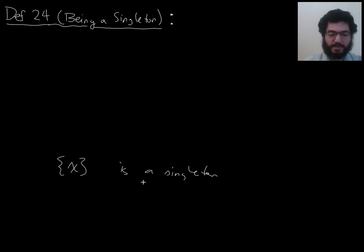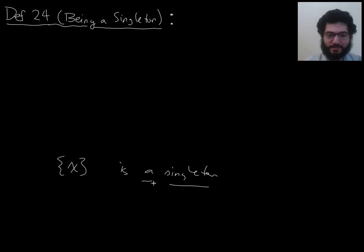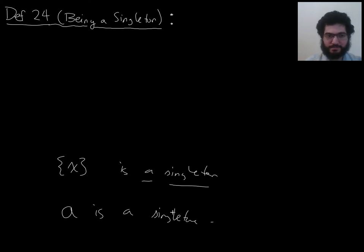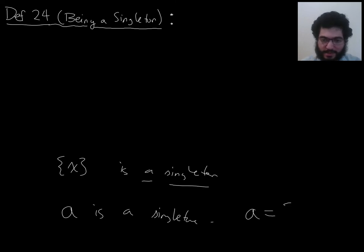So, what does it mean to say it's a singleton? Specifically, how do I formally express what this means, a singleton? If I told you A is a singleton, what does that sentence mean? What should that mean to you? It should mean that A can be written as curly braces something, where something can go here.